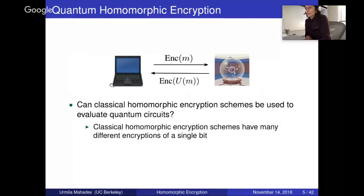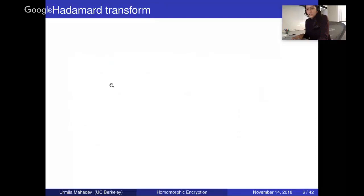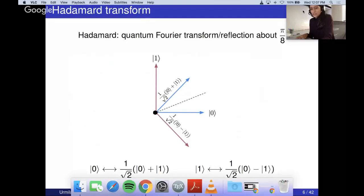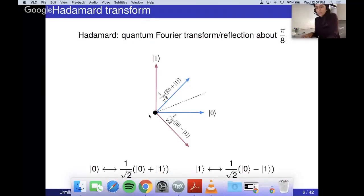The property that this conflicts with is the quantum property of interference. To explain why these two properties conflict, I need to define quantum interference, and to do this I'll define the Hadamard transform. The Hadamard transform is just the quantum Fourier transform — a reflection by π/8. It takes |0⟩ and maps it to a uniform superposition, while |1⟩ gets a negative phase in front of the |1⟩ component. And if the Hadamard transform is applied twice, it has no effect — it takes |0⟩+|1⟩ and maps it back to |0⟩.